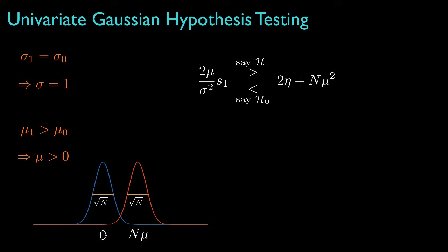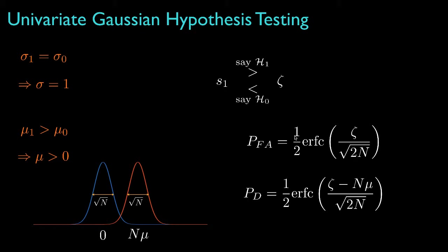The mean under hypothesis 0 will be 0, and the mean under hypothesis 1 is N times the parameter mu, and the standard deviation under both hypotheses is the square root of N. When mu_1 is less than mu_0, then mu will be negative, and the density for H1 would be to the left of the density for H0. Back to the case when mu_1 is greater than mu_0 and mu is positive, we can move the factor 2 times mu over sigma squared to the right-hand side, and compress the threshold terms into a single threshold. Accordingly, the false alarm and detection probabilities can be computed with the complementary error function, or the standard error function, or the Gaussian cumulative distribution function, and those can be used to plot the receiver operating characteristic.